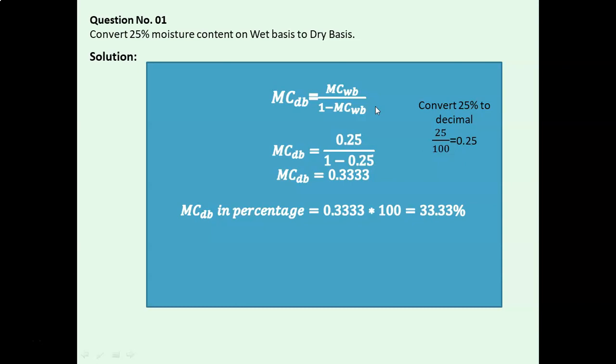So coming back to the numerical, we have to convert this 25% moisture content to decimal form and put the value in the formula, and then we will again get MCDB equals 0.3333, and in percentage we will get it as 33.33%.